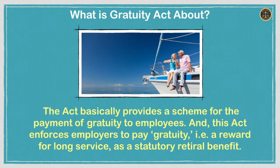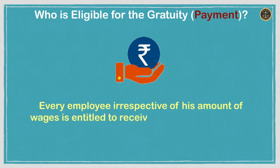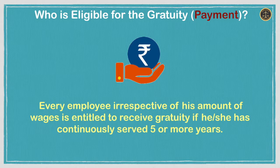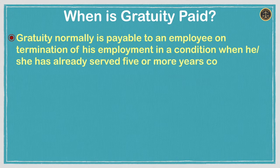Now the next question is: who is eligible for the gratuity payment? Every employee, irrespective of his or her amount of wages, is entitled to receive gratuity if he or she has continuously served five or more years. Next, when is gratuity paid? Gratuity is normally payable to an employee on termination of employment when he or she has already served five or more years continuously.